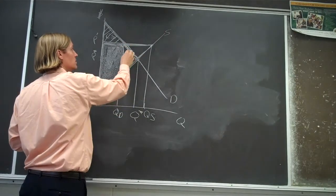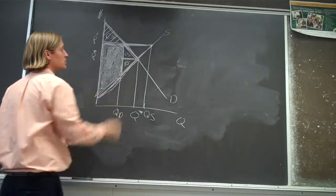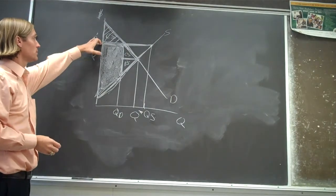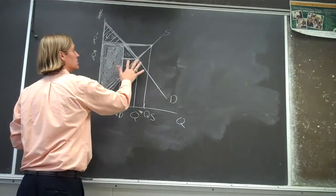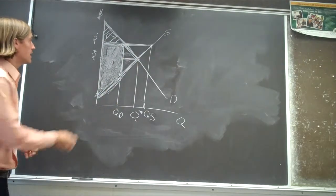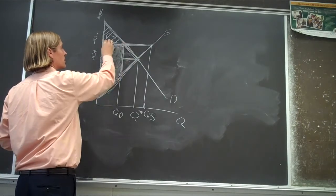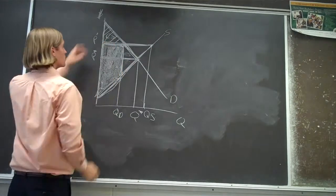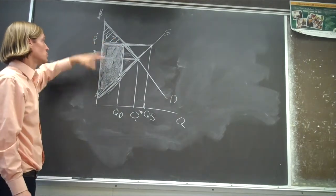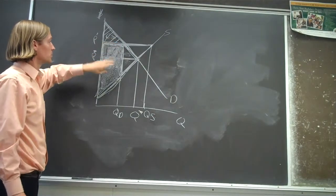Right? Beforehand, consumers were getting this. This was part of consumer surplus. This was part of producer surplus. But now with the price floor that's put in place, these two are gone. And we've seen that this rectangle here used to be consumer surplus, but it's now producer surplus. So this is just a swap, a transfer of welfare from the consumer to the producer.